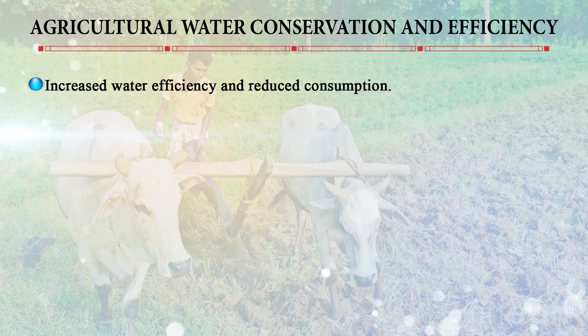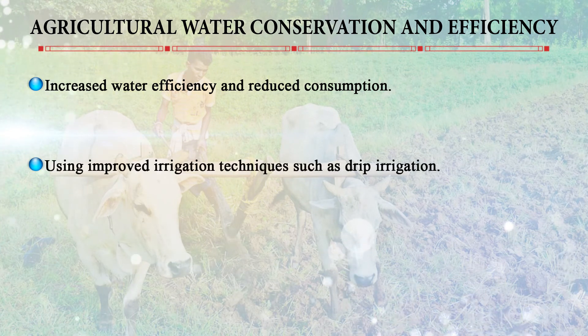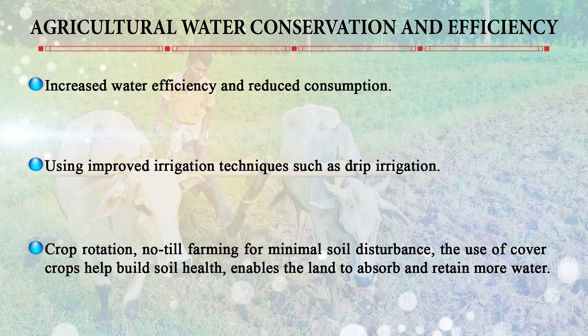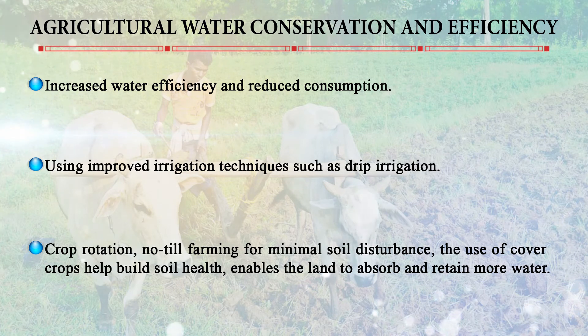Agricultural water conservation and efficiency can be achieved through improved irrigation techniques such as drip irrigation, crop rotation, no-till or zero-till farming for minimal soil disturbance, and cover crops that help build soil health so the land can absorb and retain more water. These approaches help mitigate water dependency in agricultural, domestic, and industrial sectors. We also need to reduce over-extraction of groundwater and limit its use in sectors like bottled water production.